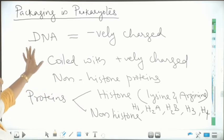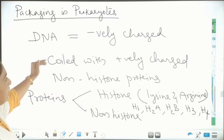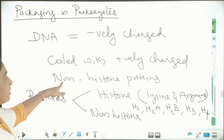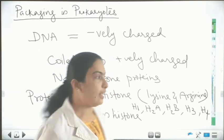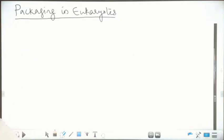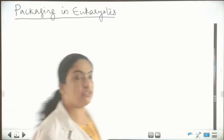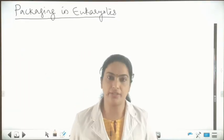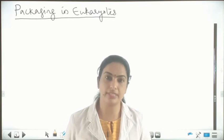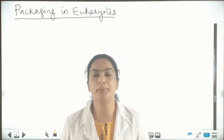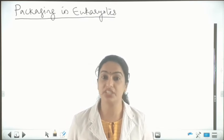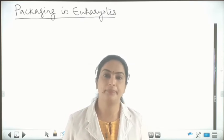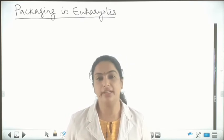So in prokaryotes, the negatively charged DNA is coiled with the positively charged non-histone proteins. Next, we can see packaging in eukaryotes. Eukaryotes, as you know, have a well-defined nucleus. Inside the nucleus, this lengthy DNA can be packed.